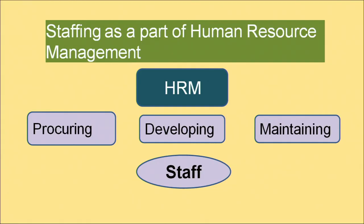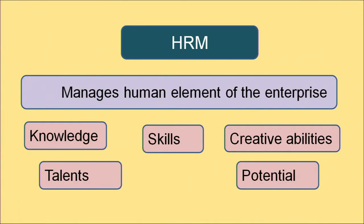Staffing as a part of human resource management. HRM involves procuring, developing, and maintaining employees — these are the functions of HRM. It also manages the human element of the enterprise. The human resource manager's main work is to manage the human element by knowing their skills, knowledge, talents, creative abilities and potential, and motivating them to get work done through their knowledge, skills, and talents.